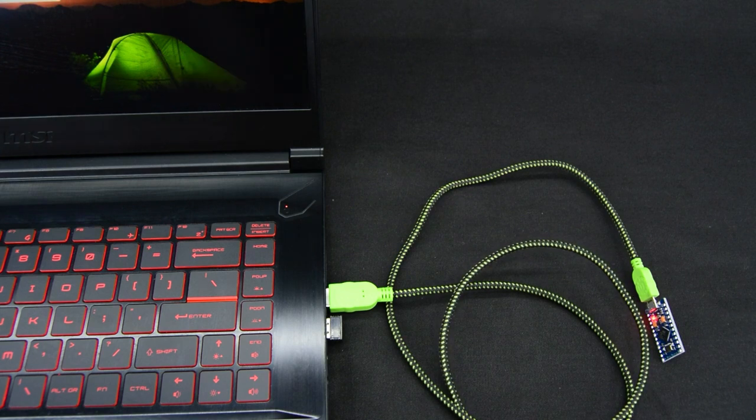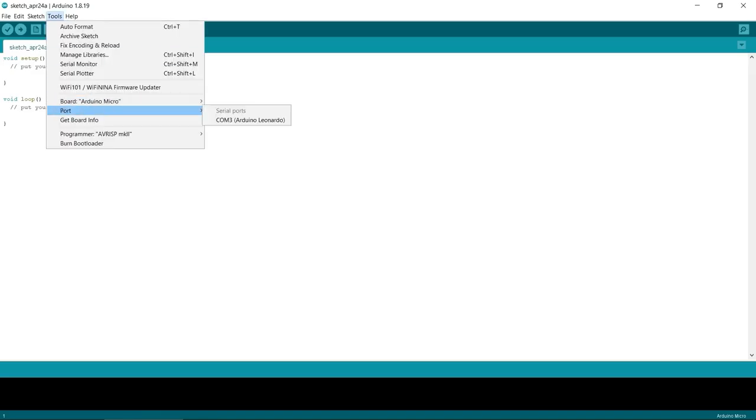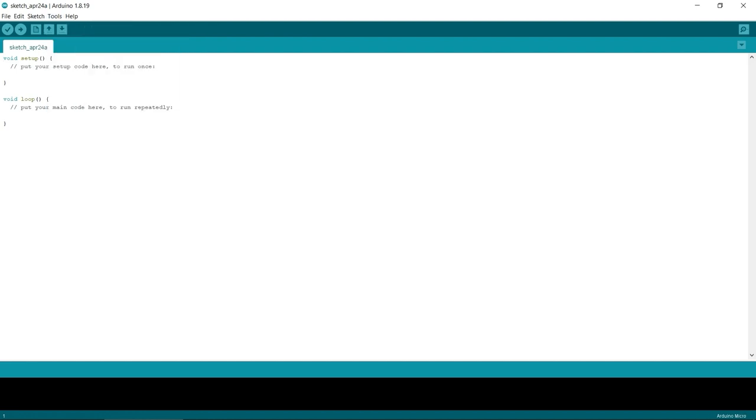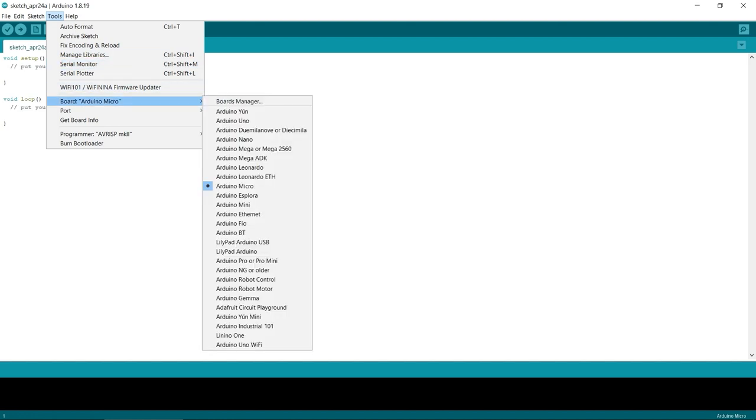Start Arduino integrated development environment. Go to Tools, Port and select the port of your connected Arduino. Then go to Tools and select the Arduino Micro option.